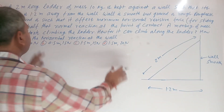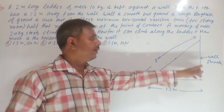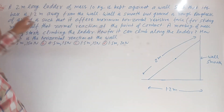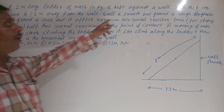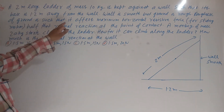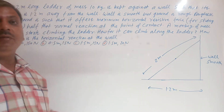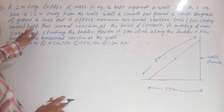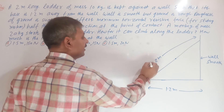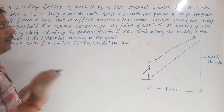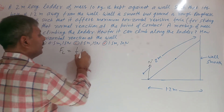One question is here: a 2-meter long ladder of mass 10 kg is kept against a wall. The wall is smooth such that its base is 1.25 meters away from the wall. The wall is smooth, the ground is rough. The roughness of the ground is such that it offers maximum horizontal resistance for sliding — half of the normal reaction.